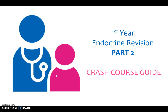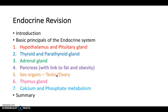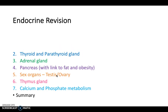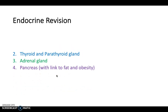Hello and welcome to part 2 of this endocrine revision series for the Crash Course Medicine. Today we're going to be looking at some of the specific endocrine organs, including the thyroid and parathyroid glands, the adrenal glands and the pancreas, and then we'll link that into obesity and diabetes in order to give it a little bit of a clinical context. In the last video we looked particularly at the hypothalamus and pituitary gland, and in the next video we're going to continue looking at some other endocrine organs.